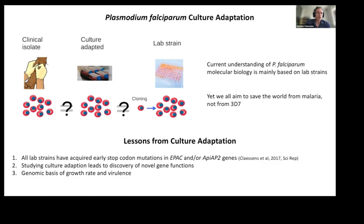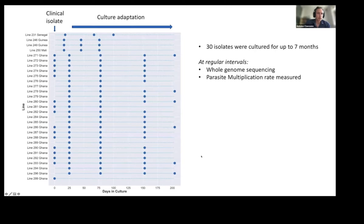Today I will focus on the genomic basis of growth rates. To do so, we cultured 30 new clinical isolates, mainly from Ghana, in a culture flask for up to seven months. Each dot represents a time point at which we performed whole genome sequencing and measured the parasite multiplication rates.